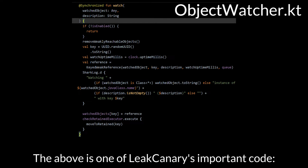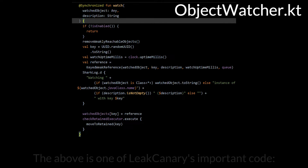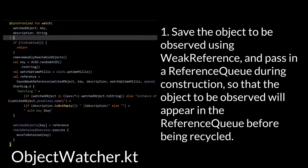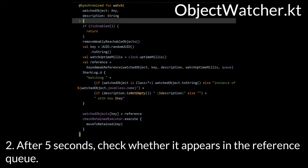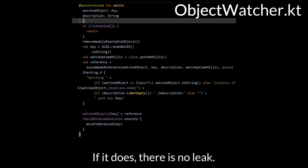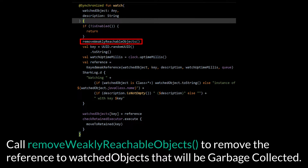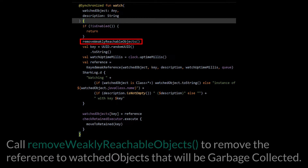The above covers one of LeakCanary's important code flows. Step 1: Save the object to be observed using a weak reference and pass in a reference queue during construction, so that the object to be observed will appear in the reference queue before being recycled. Step 2: After 5 seconds, check whether it appears in the reference queue. If it does not, there is no leak. Call RemoveWeaklyReachableObjects to remove the references to watched objects that will be garbage collected.